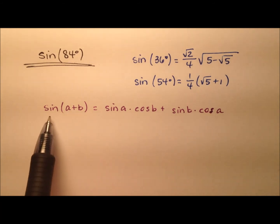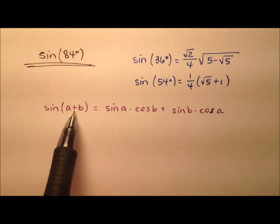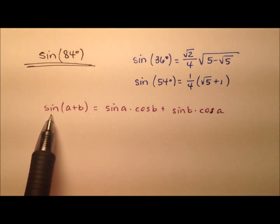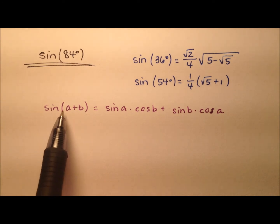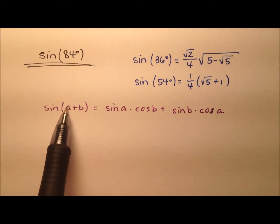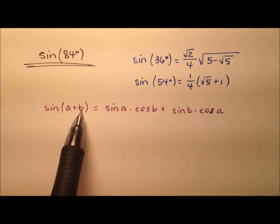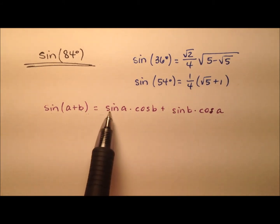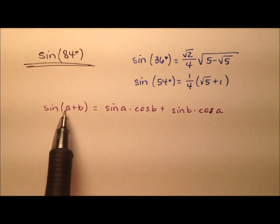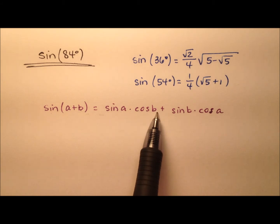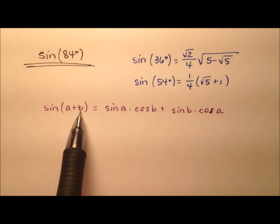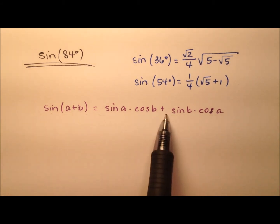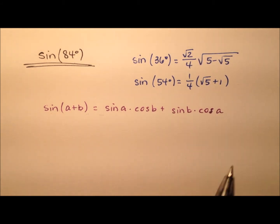We're going to find this value by using the sum identity for sine, which says the sine of a and b — two angles added together — has the expansion: sine of a, the first angle, times the cosine of b, the second angle, plus the sine of b times the cosine of a.